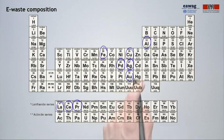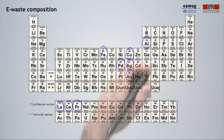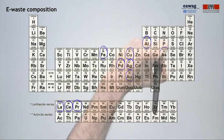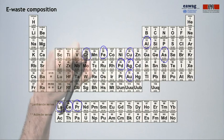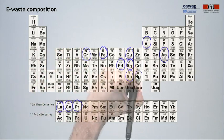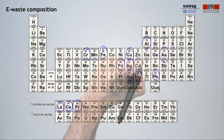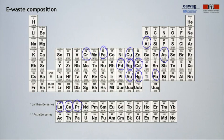In addition, e-waste also contains many hazardous materials — heavy metals, for example, such as arsenic, chromium, mercury, lead, cadmium, etc. — and chemicals such as chlorofluorocarbon used in cooling units, polyvinyl chloride used as cable insulator, or various flame retardants such as polybrominated biphenyls.